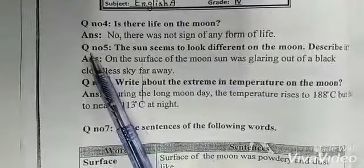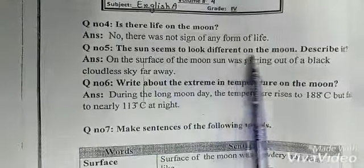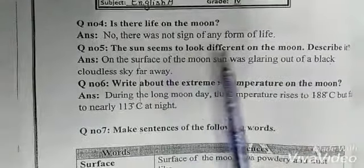...was no sign of any form of life. Nahi waha zindagi ke koi asar nahi tha. Question number 5: The sun seems to look different on the moon. Chand ki sata par suraj different nazar ata tha.